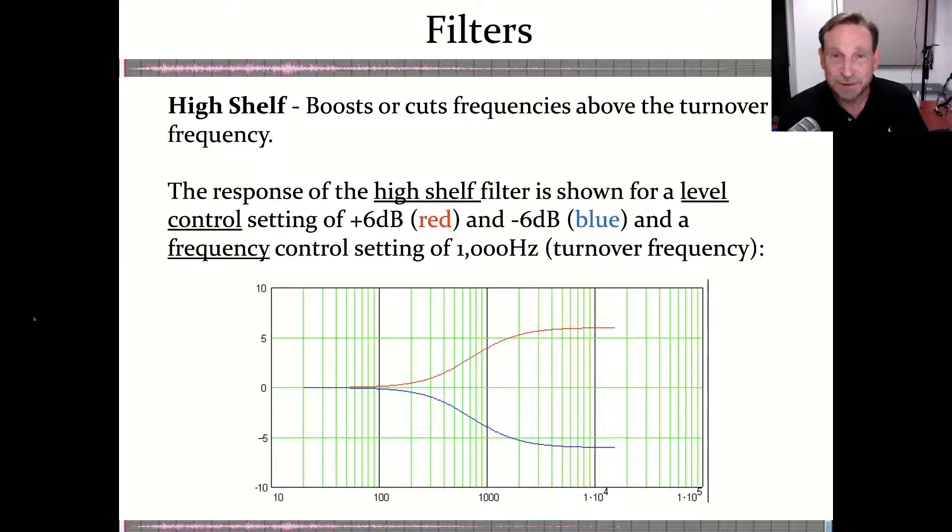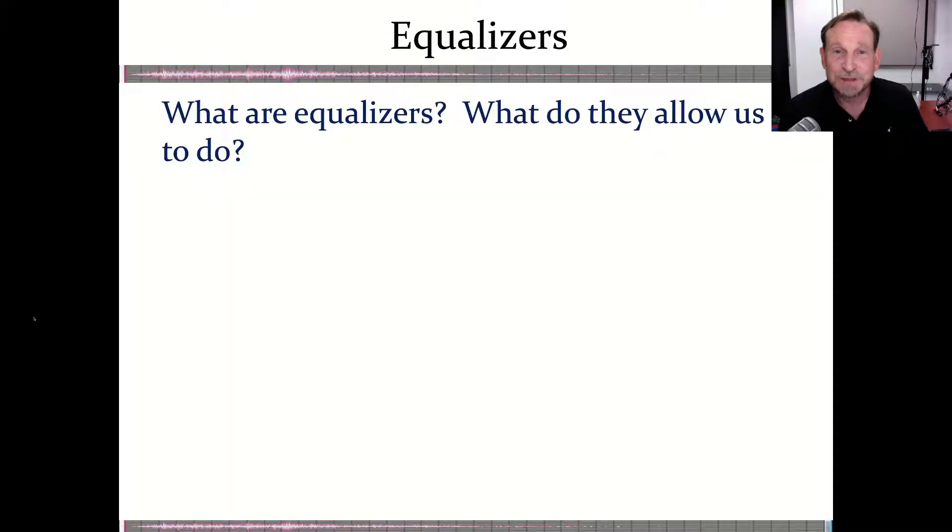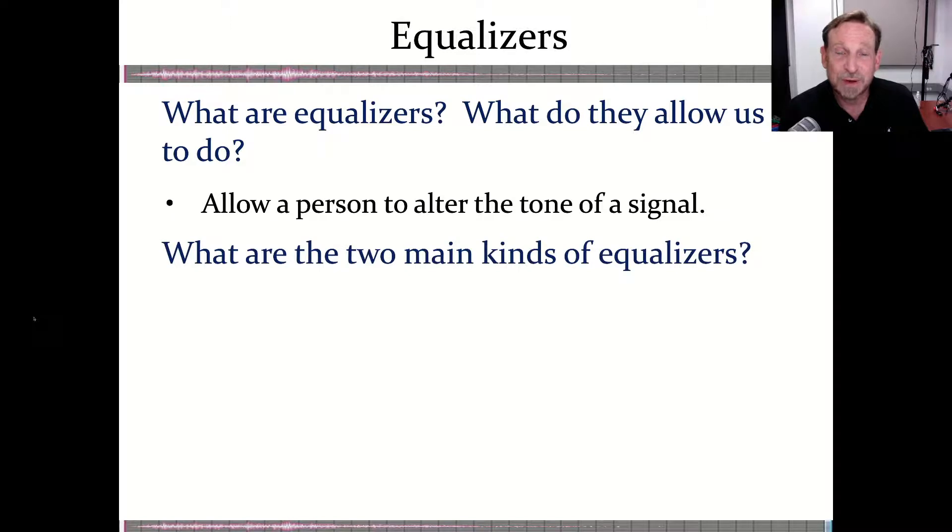Now we've hit filters and it's time to move on to equalizers. The question is, of course, what do they do? What do they allow us to do? Well, they allow us to control the tone of a signal. But you might say, well, filters could control the tone too because we're adjusting frequency. And that's true. But equalizers give us more control over the tone. And the reason is because we are going to be controlling a variety of frequencies at the same time. And we're going to boost or cut them at these different points.